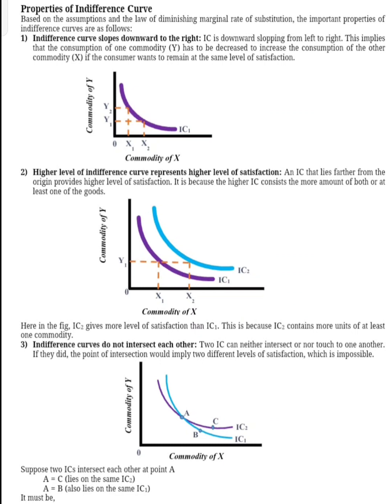The important properties of indifference curves: First, the indifference curve slopes downward to the right. We use commodity X and commodity Y. The indifference curve slopes downward to the right — this is a downward sloping curve from left to right, with points such as y1 and x2 marked on it.